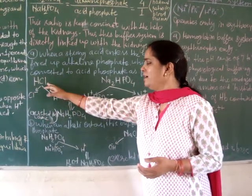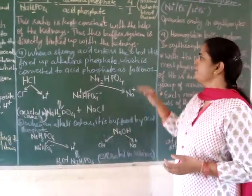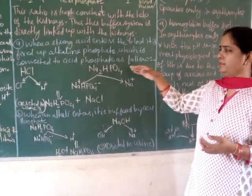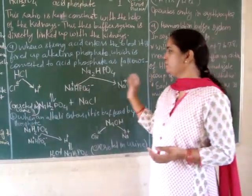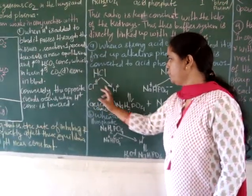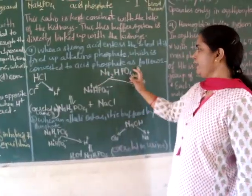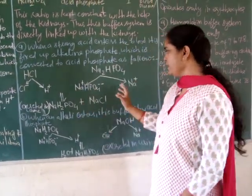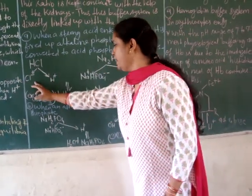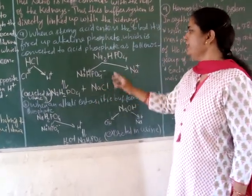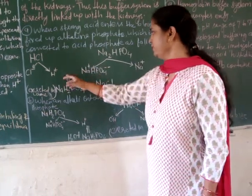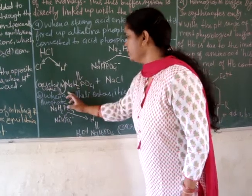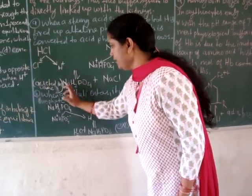When a strong acid like hydrochloric acid enters the blood, it is fixed up by alkaline phosphate, which is converted into acid phosphate. The acid dissociates into proton and chloride, and alkaline phosphate dissociates into its ionic form. Sodium combines with chloride to form NaCl, and the alkaline phosphate combines with the proton, resulting in the formation of acid phosphate (NaH₂PO₄).